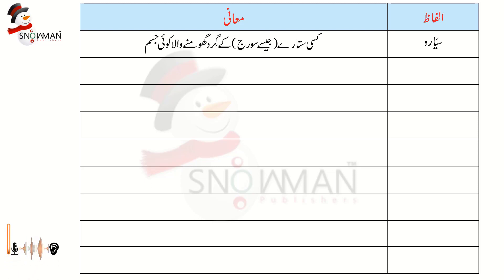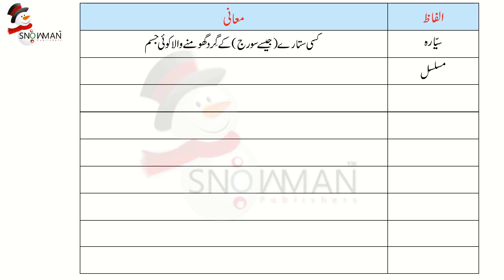بچوں کو یہ بھی بتائیں گے کہ سورج سیارہ نہیں ہے، سورج ستارہ ہے، اور سیارے ستاروں کے گرد گھومتے ہیں۔ اگلا لفظ ہے مسلسل یعنی لگاتار جس میں وقفہ نہ آئے۔ پھر ہے حرارت یعنی گرمی — ہیٹ — چونکہ لفظ ہیٹ سے بچے واقف ہیں، تو آپ بتا سکتے ہیں کہ حرارت ہیٹ کو ہی کہتے ہیں۔